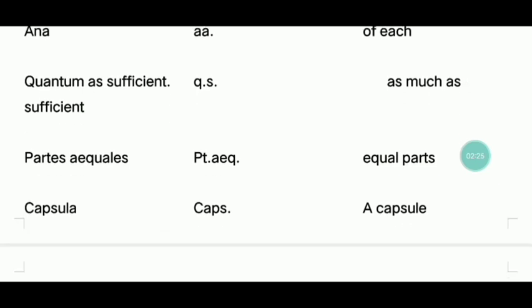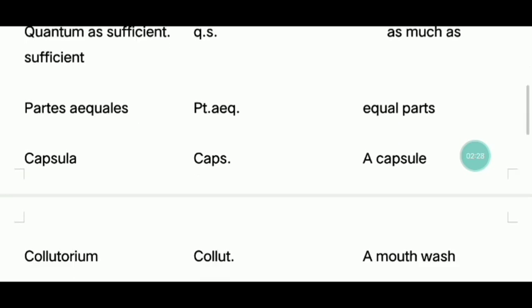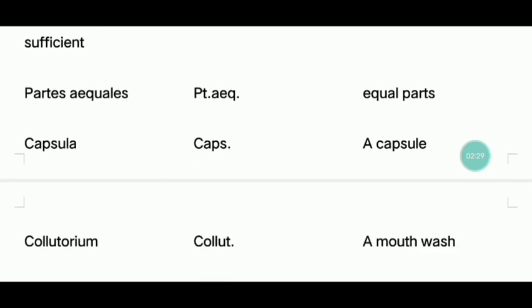As much as sufficient. Parts — A — equals equal parts. That is, half tablet, one tablet, one by three. You can choose equal parts.